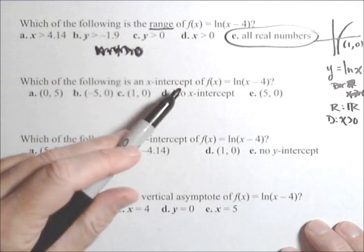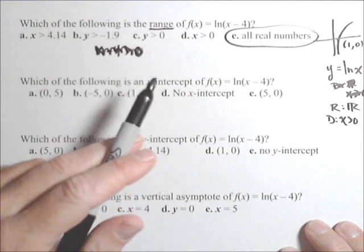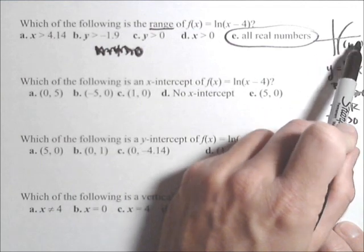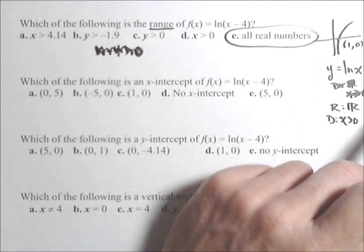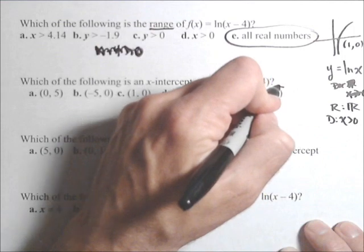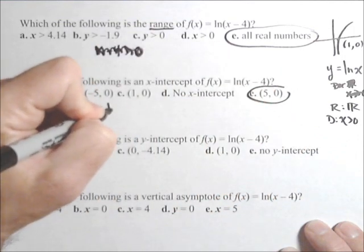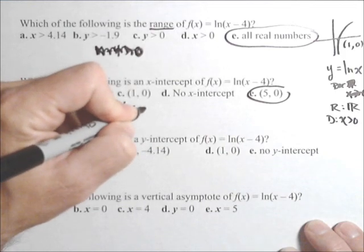Now, which of the following is an x-intercept of f of x equals ln of x minus 4? Well, this x-intercept has been shifted forward to the right, so it's going to be at the point (5, 0). The other way to see that is to set your equation equal to 0 and solve.